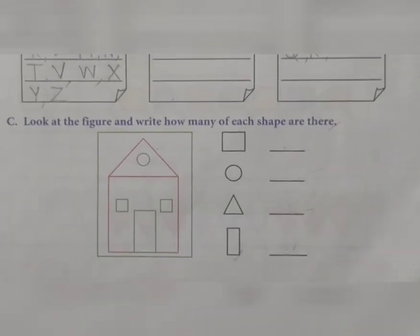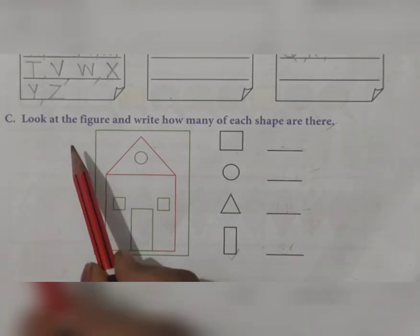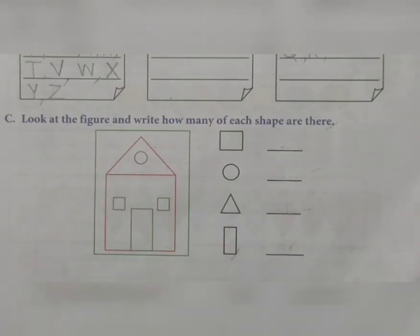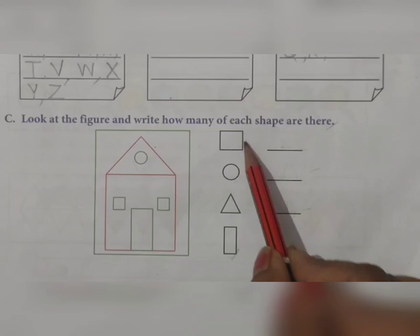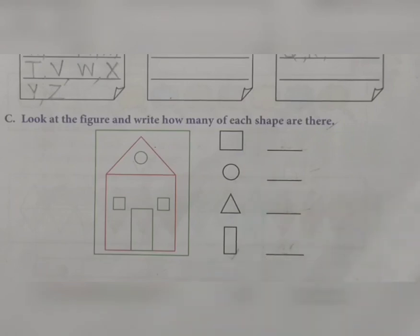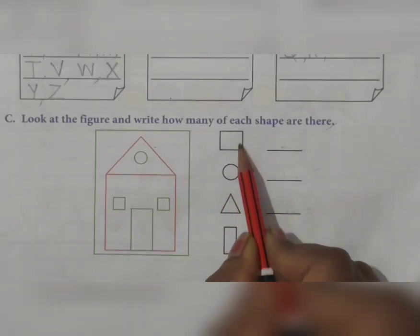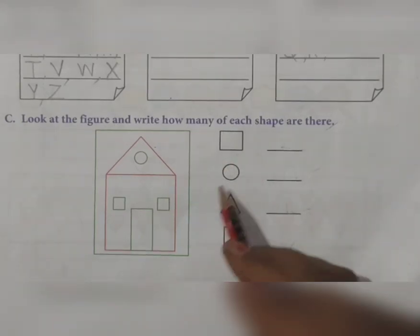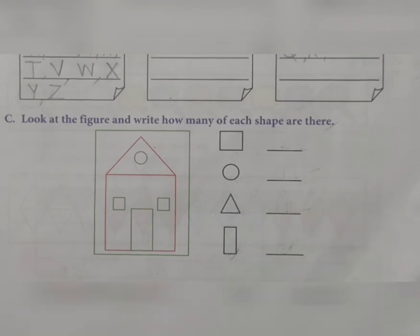Now see question number C - very easy. Just read the question: look at the figure and write how many of each shape are there. In these shapes, different shapes are used and you have to count them. The shapes present are square, circle, triangle, and rectangle.